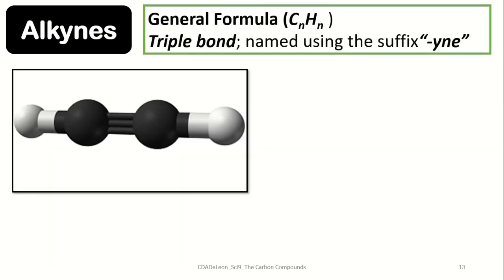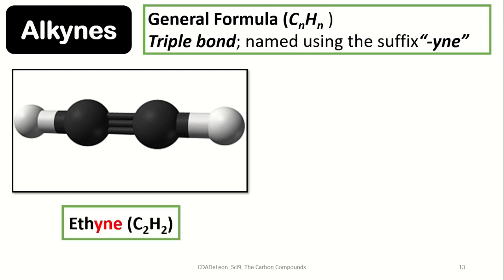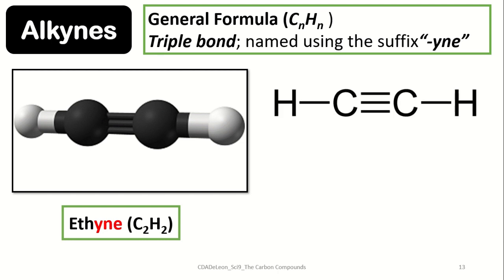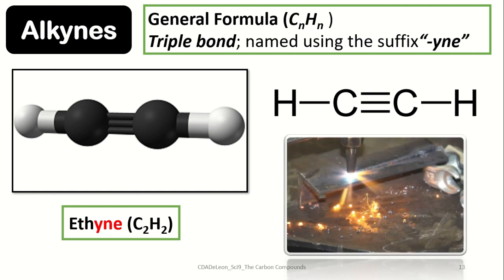Alkynes have the general formula of CnH2n-2, where n signifies the number of carbon atoms. Alkynes possess triple bonds and are named using the suffix -yne. Our example is ethyne, made up of two carbon atoms and two hydrogen atoms. As shown in the illustration, there is a triple bond between the carbon atoms. Ethyne, or acetylene, is commonly used as fuel for blowtorches.